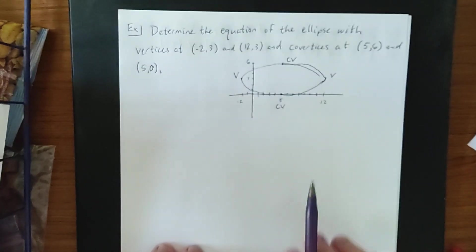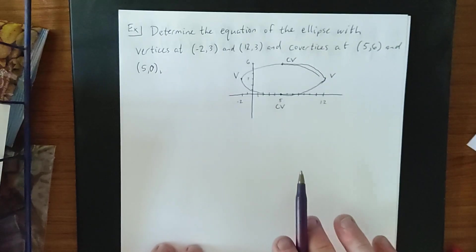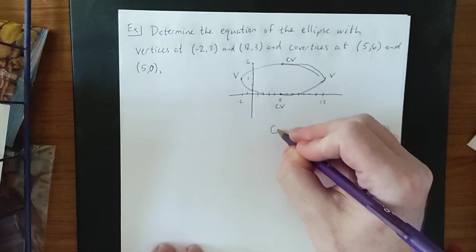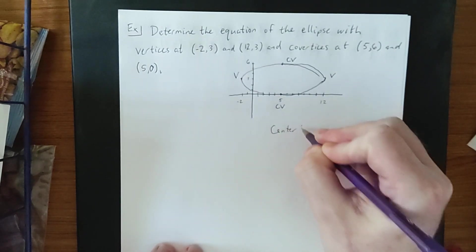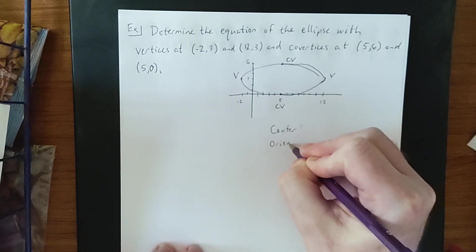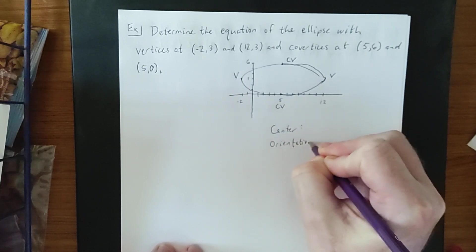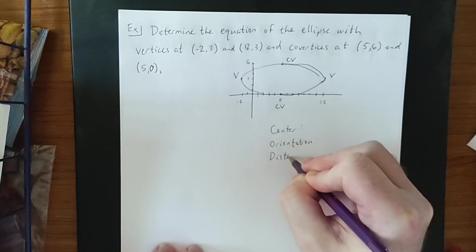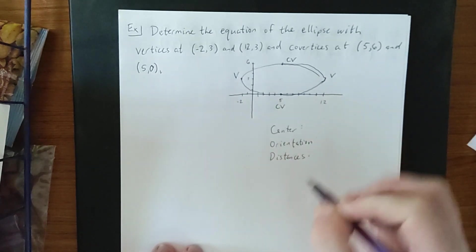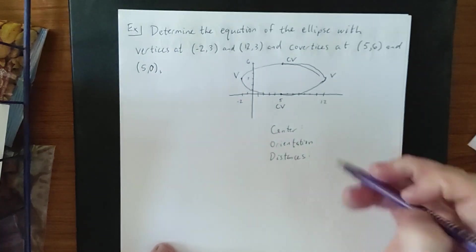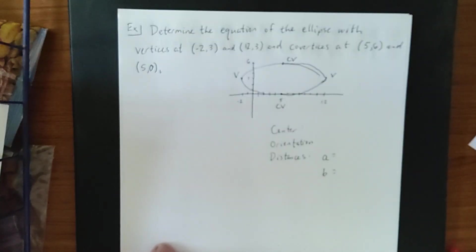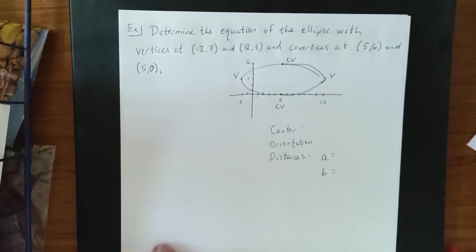The three things that are going to lead to success on any ellipse problem — really any conic section problem — are knowing what is the center, what is the orientation, and what are the key distances. To come up with the equation of an ellipse, the two key distances we need are a and b. Once we have the center, the orientation, and a and b, we are all set.